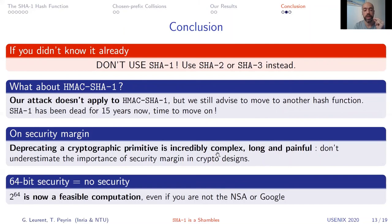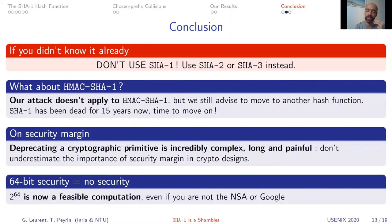I would like to comment on security margin. SHA-1 is a typical example of why security margin is important in cryptography. Deprecating a cryptographic algorithm is very complex, extremely long and painful — even today we still have SHA-1 in the wild at a non-negligible percentage. Do not underestimate the importance of security margin. Finally, having 64-bit security today is probably no security at all. We conducted a computation of 2 to the 64 for a reasonable amount of money — about a few thousand US dollars — so you no longer need to be the NSA or Google to conduct such a large computation. Thank you for watching.